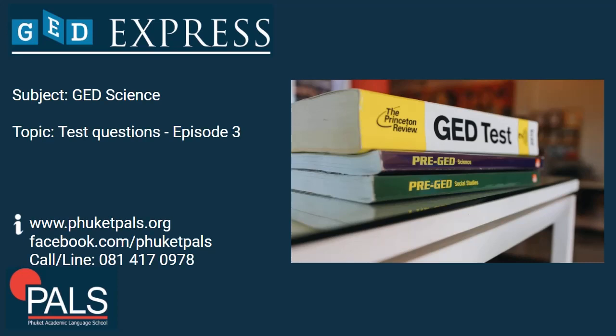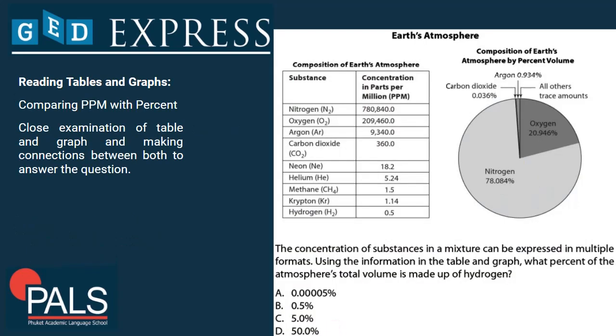Hello, this is teacher Alex from Phuket Paths, and welcome to the next GED Science Screencast episode 3 on test questions. If you find this video in any way helpful, please hit the subscribe button below — this allows us to help more people like you. The first question we are looking at today is about Earth's atmosphere, reading graphs and tables, and making connections between both.